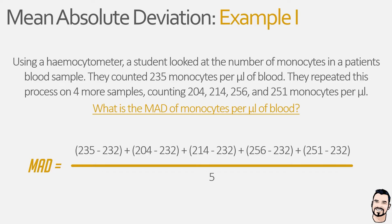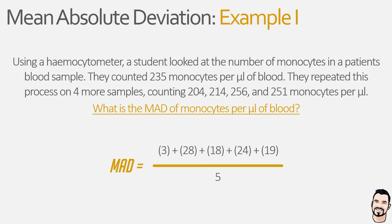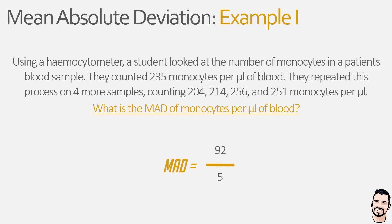We simplify by calculating everything in the brackets. Before continuing, all values must be converted to absolute values: 3, 24, and 19 remain the same, but minus 28 and minus 18 become positive 28 and positive 18. Adding all the numbers on the top line gives a value of 92, which is divided by 5 — the number of data observations. This gives the student a mean absolute deviation of 18.4, or more specifically 18.4 monocytes per microliter. In general terms, the lower the value the less variable the data; the data values are similar to one another with smaller differences between them.